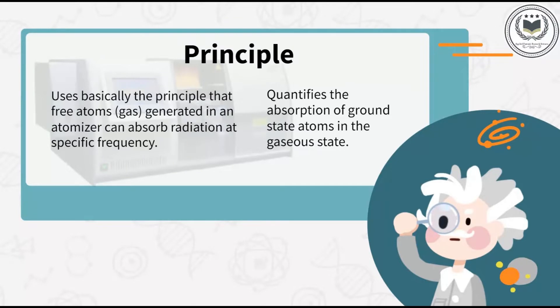Atomic Absorption Spectroscopy is a technique for measuring the concentrations of metallic elements in different materials. As an analytical technique, it uses electromagnetic wavelengths coming from a light source.